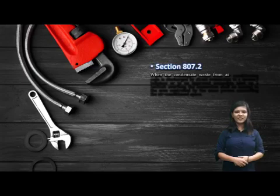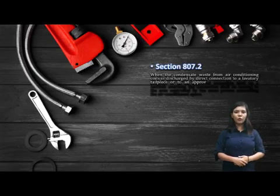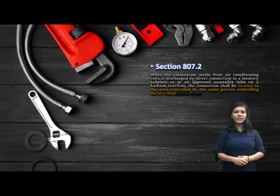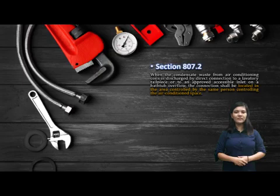Section 807.2: When the condensate waste from air conditioning coils is discharged by direct connection to a lavatory tailpiece, or to an approved, accessible inlet from a bathtub overflow, the connection shall be located in the area controlled by the same person controlling the air conditioning.